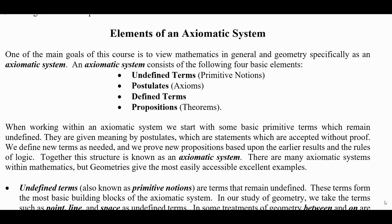One of the main goals of my geometry course is to view mathematics in general, and geometry specifically, as an axiomatic system. An axiomatic system consists of four basic elements: undefined terms, postulates, defined terms, and propositions.